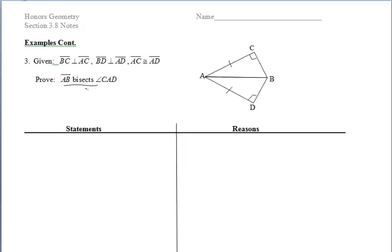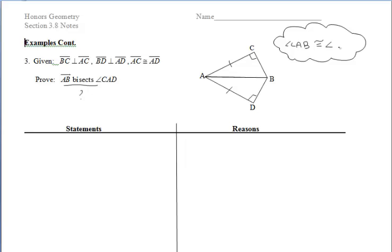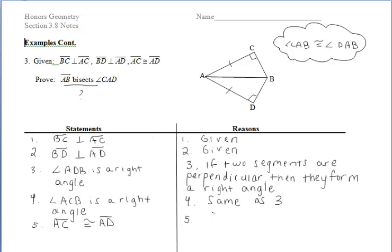In example 3, we're given a couple of different things, but we want to prove that Ray AB bisects angle CAD. I'm reviewing this idea with you because in order to say that AB bisects angle CAD, we have to think about what has to happen as a result. If that were true, we know that those two angles, CAB and DAB, would have to be congruent. So that should be our goal moving forward.